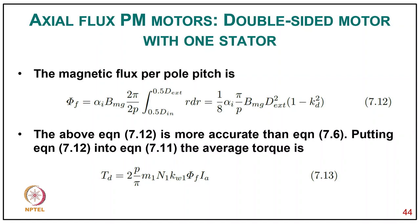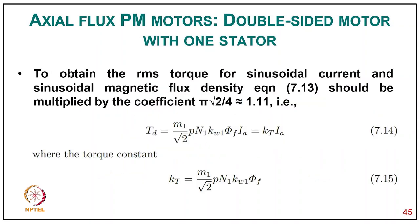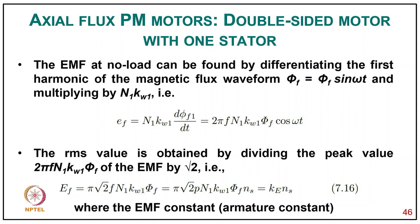Substituting the flux equation: Td = 2·(p/2)·m1·N1·kw1·φf·Ia. To obtain the RMS torque for sinusoidal current, the peak magnetic flux density is multiplied by π√2/4 = 1.11, giving Td = (m1/√2)·p·N1·kw1·φf·Ia = Kt·Ia, where the torque constant Kt = (m1/√2)·p·N1·kw1·φf. The no-load EMF is found by differentiating the first harmonic of magnetic flux φf1 = φm·sin(ωt), giving Ef = N1·kw1·(dφf1/dt) = 2πf·N1·kw1·φf·cos(ωt). The RMS value is Ef = π√2·f·N1·kw1·φf = π√2·p·N1·kw1·φf·Ns = Ke·Ns.